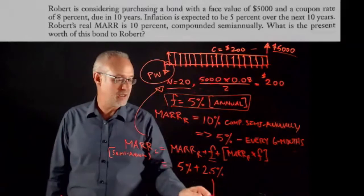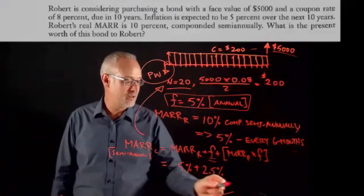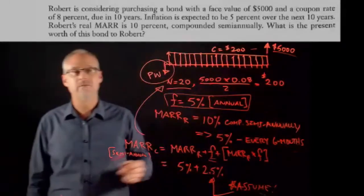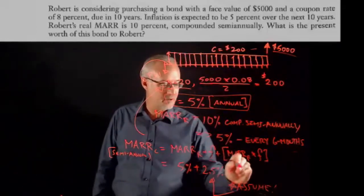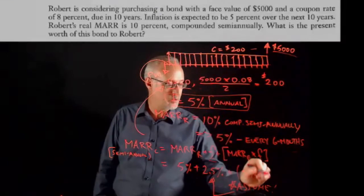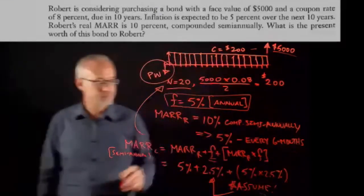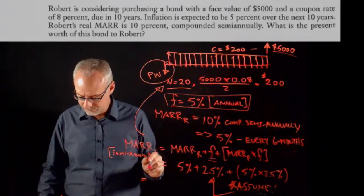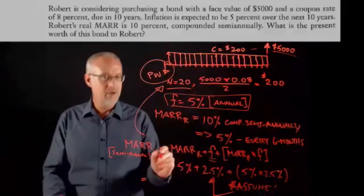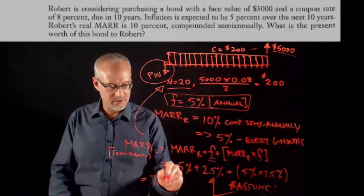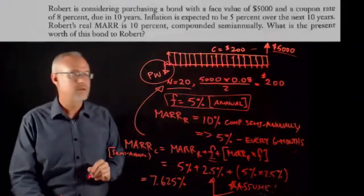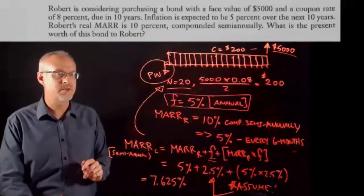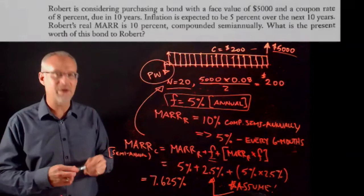At this point if you're on an exam, I would just write in here something like assume, just because. And then you've got 5% times 2.5%, and that would be a small term. If you work out what that is, I get 7.625%. Not compounded monthly - this is compounded semi-annually.